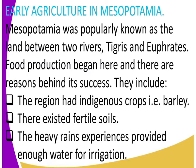These fertile soils made it possible to grow crops in Mesopotamia. Also, the region experienced rains that provided enough water for irrigation. Whenever there is good rain, crops have no problem, so there was enough rain for irrigation.